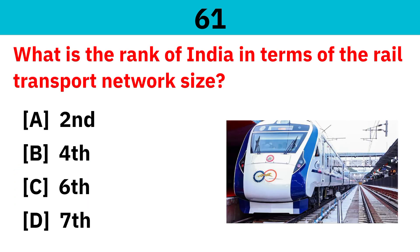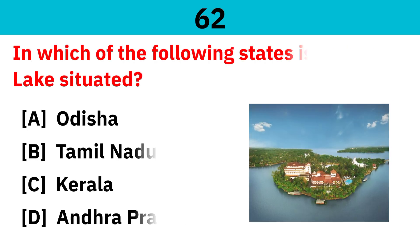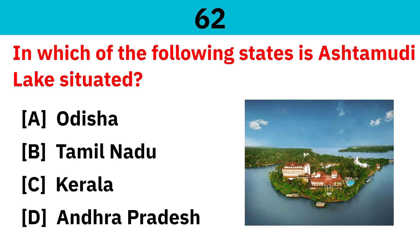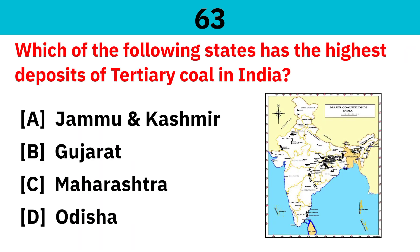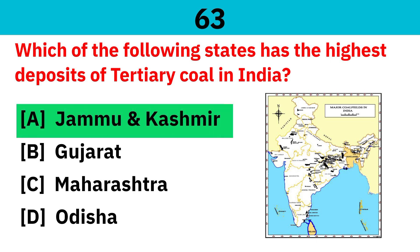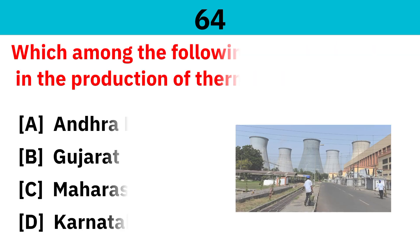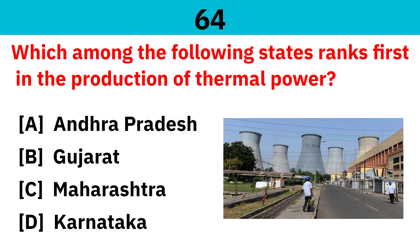What is the rank of India in terms of rail transport network size? Correct answer is fourth. In which of the following states is Ashtamudi Lake situated? Correct answer is Kerala. Which of the following states has the highest deposits of lignite coal in India? Correct answer is Jammu and Kashmir. Which among the following states leads in the production of thermal power? Correct answer is Maharashtra.